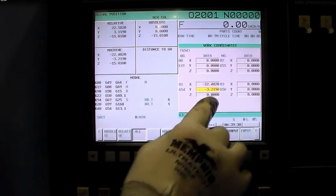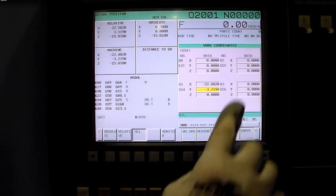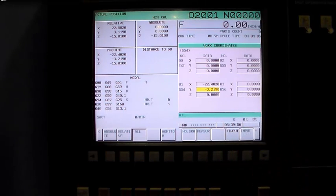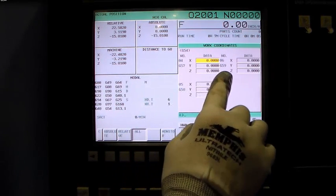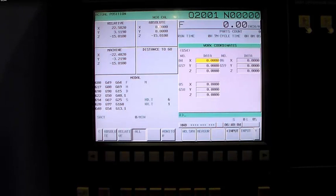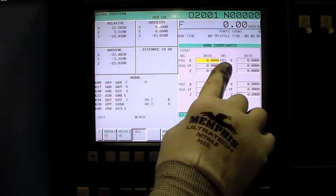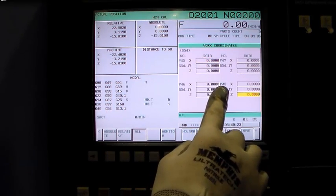The same process would work for G55, G56, and if you page down you'll find G57, G58, and G59. A lot of controls have additional work offsets: G54.1, position 1, 2, 3, 4, all the way down to 48. If you keep scrolling down you'll find P48.